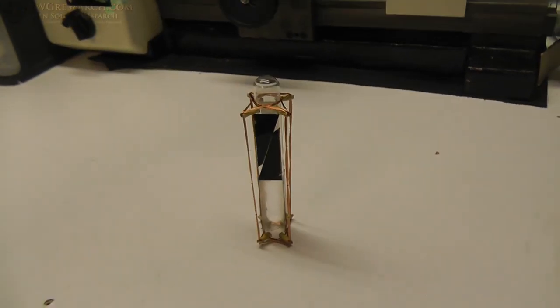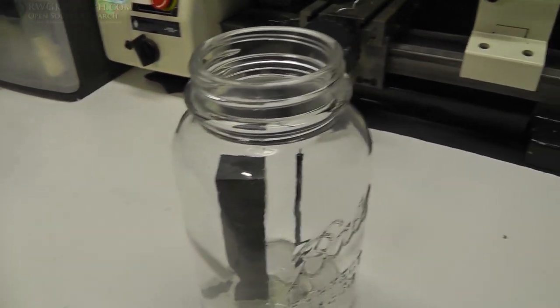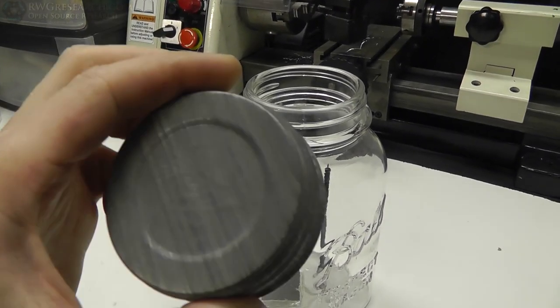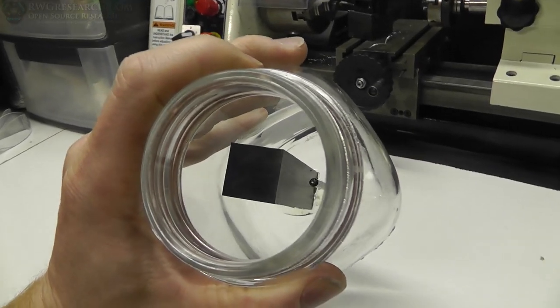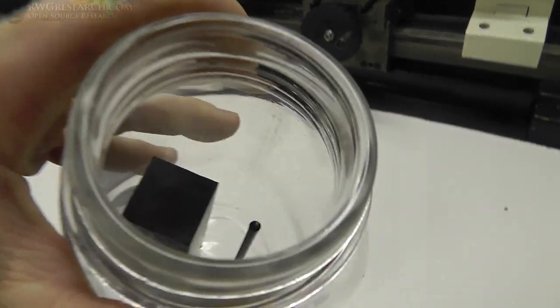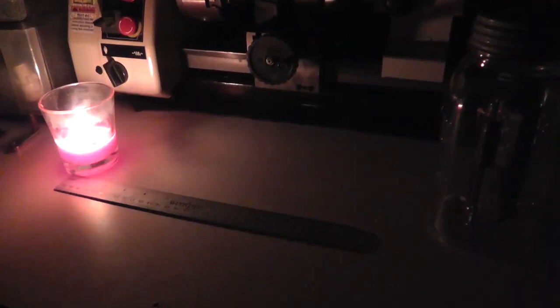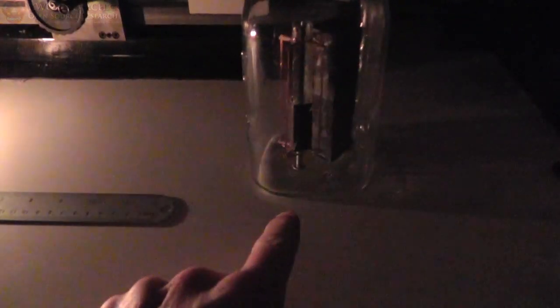All right, so this is an original mason jar, a Ball mason jar, and I've just epoxied that big magnet and the rod in there at the needle point. All right guys, so here it is. It's about fifteen, sixteen inches away from the candle and still turning. So briefly, how this works is it's basically a commutator through the solar cells.